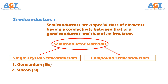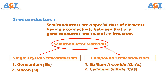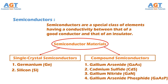Whereas compound semiconductors, such as gallium arsenide, cadmium sulfide, gallium nitride, and gallium arsenide phosphide, are constructed of two or more semiconductor materials of different atomic structures.